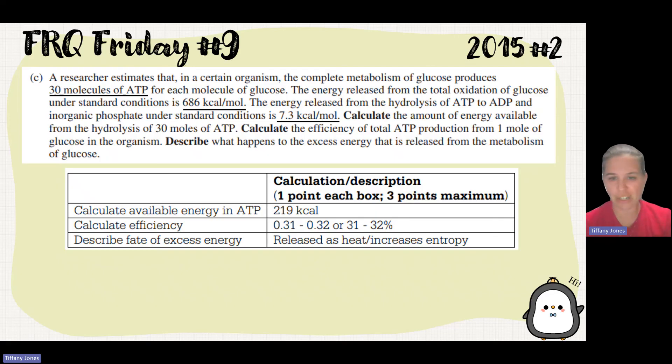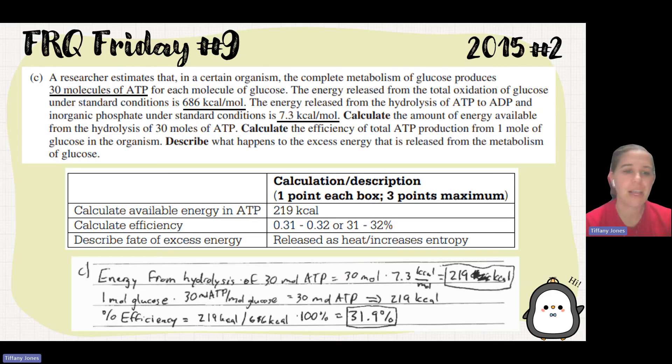And then they want to know, what happens to that excess energy? What happens to the other 68 percent of that energy? Well, it just releases heat. Here we see the student's calculation. Since it's a calculate question, you don't have to write a couple of sentences. I would always write a couple of sentences at the end and just say that the total amount of energy is 219, but that's up to you. You see they do the calculation, 30 times 7.3. Notice that they do have units. You must have units on this.